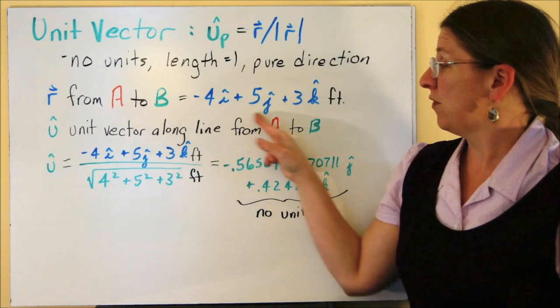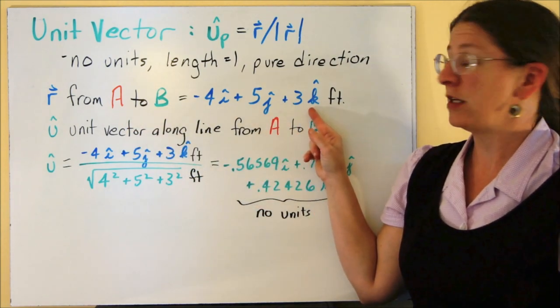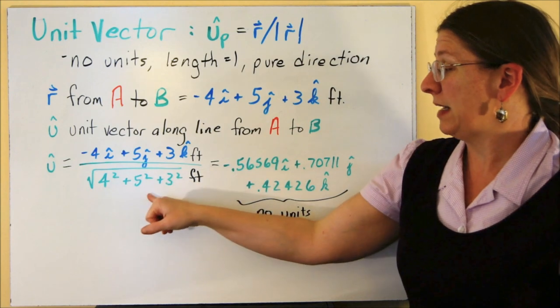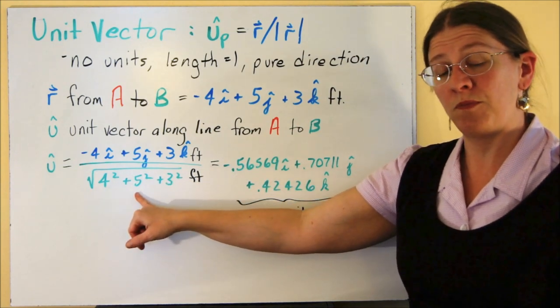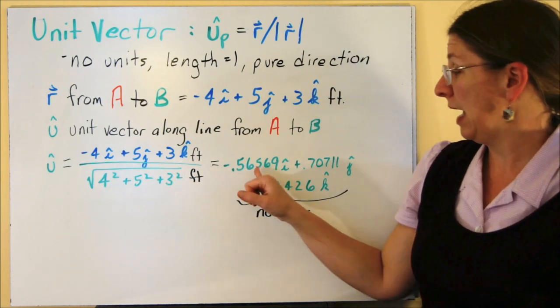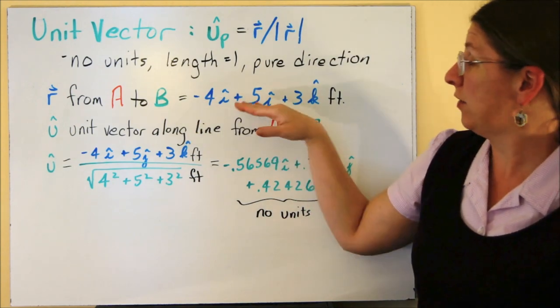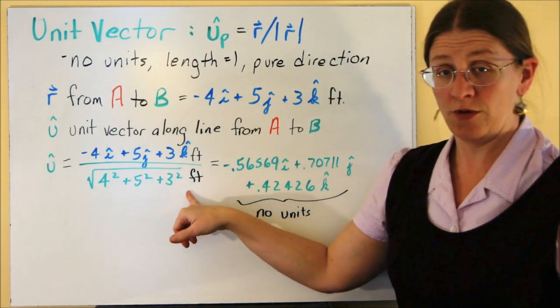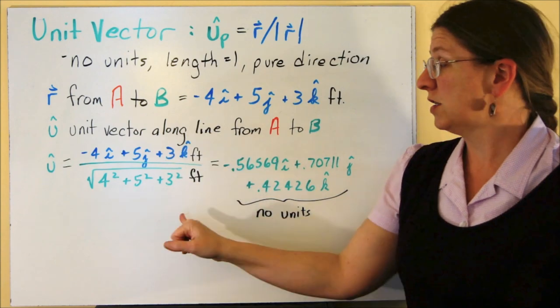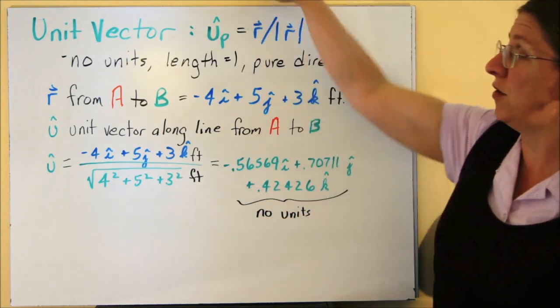So the position vector here that I had from A to B was minus 4i plus 5j plus 3k. If I divide it by its own magnitude using the Pythagorean theorem, then I have a unit vector. This one doesn't have any units because R had units of feet, and the magnitude of R has units of feet. So the units are going to cancel. You will have just a unit vector.